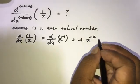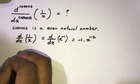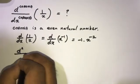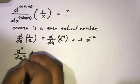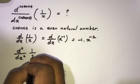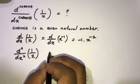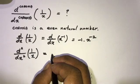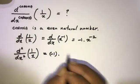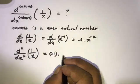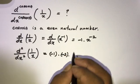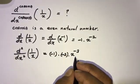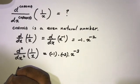Now differentiate with respect to x again. This gives us minus 1 times minus 2 times x to the minus 3 power.